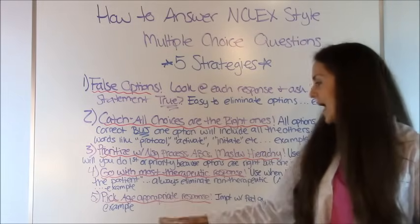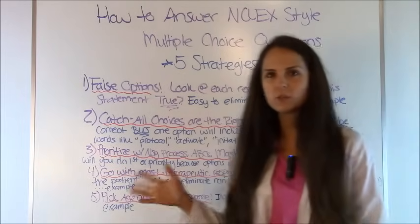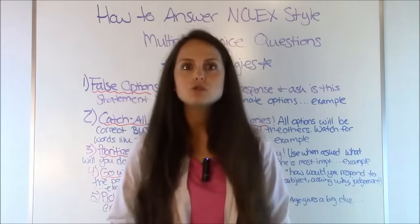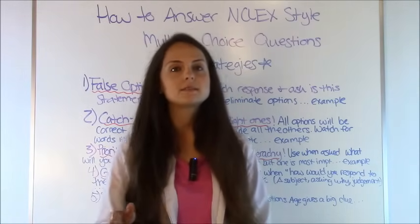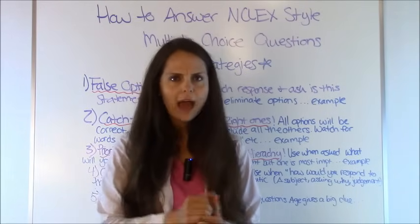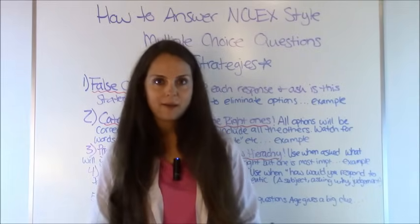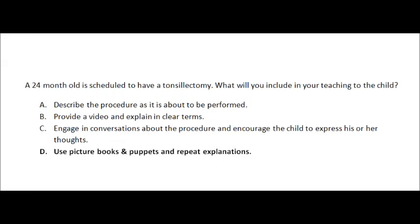Number five: pick age-appropriate responses. In most questions, especially pediatric questions, they will tell you how old the patient is — like 24 months, 5 years, 13 years old. This is a huge clue for which options you can eliminate. Many times you'll have a two-year-old and it will ask how you're going to teach the patient. You can easily go through and eliminate the ones that are not age-appropriate. Let me show you an example. A 24-month-old is scheduled to have a tonsillectomy. What will you include in your teaching to this child? The biggest tip for getting the right answer is the child's age — 24 months, which is two years old. Think about what the milestones are for a two-year-old and how they learn best.